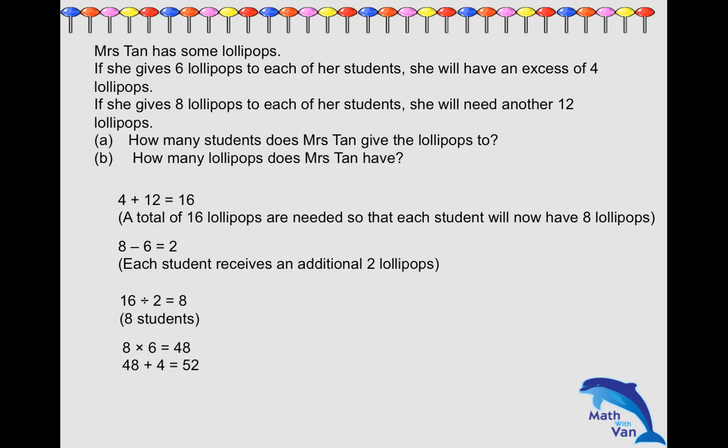Now using scenario two to check our answer: if she were to give eight lollipops, so eight times eight gives me 64. But she does not have enough, so you take away the 12, which is 52. So 52 is the actual number of lollipops. As simple as that - a four-step solution.